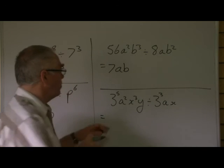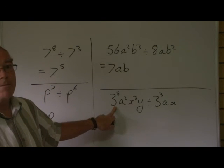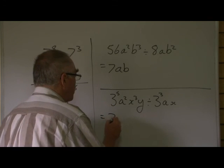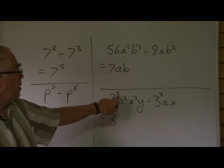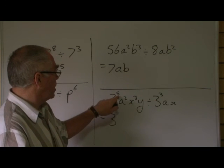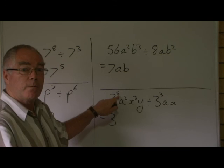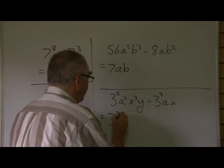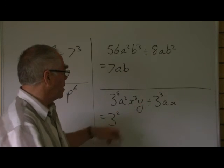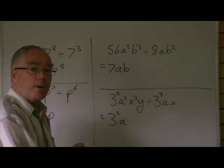And again, let's take a look. Here we have our numbers with a base and an index, so we're going to maintain the base and work on the index. So division: 3 to the 5 divided by 3 to the 3 is going to be 3 to the 5 take 3, which is 3 squared. a squared divided by a is going to be a to the power of 2 take 1, which is a.